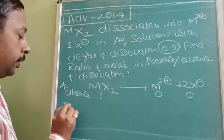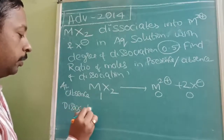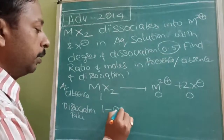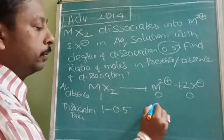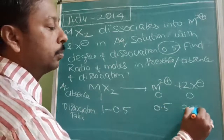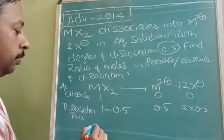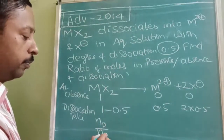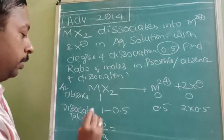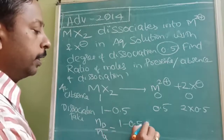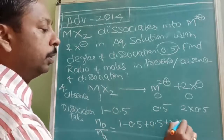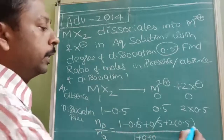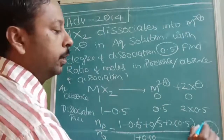If dissociation takes place, MX2 becomes 1 minus 0.5, M²⁺ becomes 0.5, and X⁻ becomes 2 × 0.5. So the number of moles after dissociation divided by moles in absence of dissociation will be: (1 − 0.5 + 0.5 + 2 × 0.5) divided by (1 + 0 + 0). This simplifies — answer is 2/1, which equals 2.